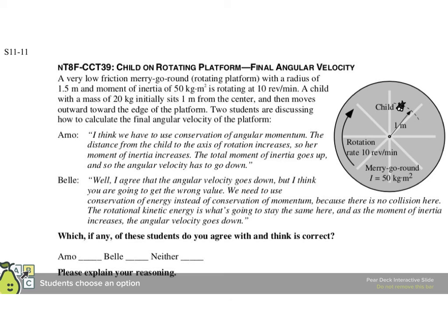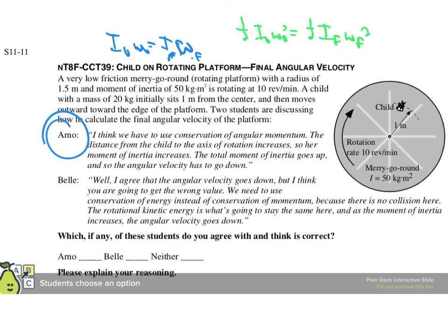So Arno is saying I₀ω₀ = I_Fω_F, and Bell is saying ½I₀ω₀² = ½I_Fω_F². They both predict ω_F will be less, but by different values. Which one would you agree with? It turns out Arno is right, because the child exerts no external torque. If you consider the system to be the merry-go-round and the child, as the child walks along the merry-go-round it's an internal force — an internal torque — so it can change the motion of the merry-go-round only by conserving the angular momentum of the system. You can't really do energy conservation because there are sources of energy that aren't accounted for, such as the chemical potential in the child's muscles.